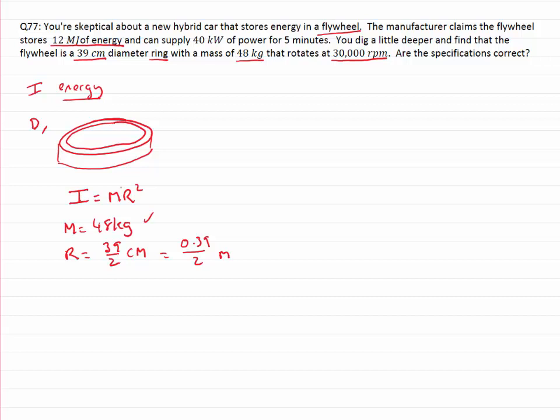In addition to the rotational inertia, we also know that the flywheel is rotating, spinning around. And this initial rotation rate is equal to 30,000 revs per minute.